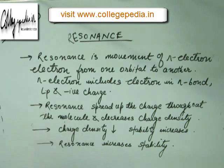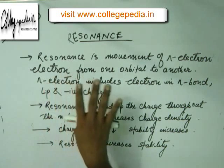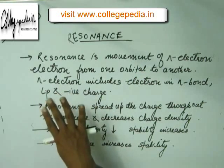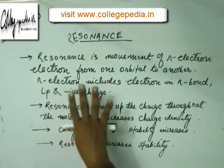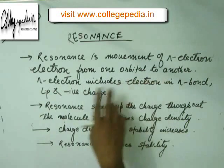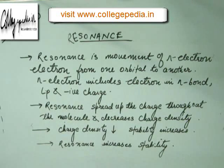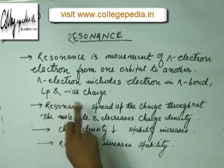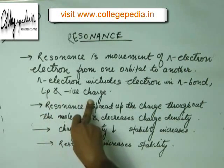Now here is the definition of resonance. Resonance is the movement of pi electrons from one orbital to another. Pi electrons do not only include the electrons in a pi bond — they include the electrons in a pi bond, lone pairs, and negative charges.